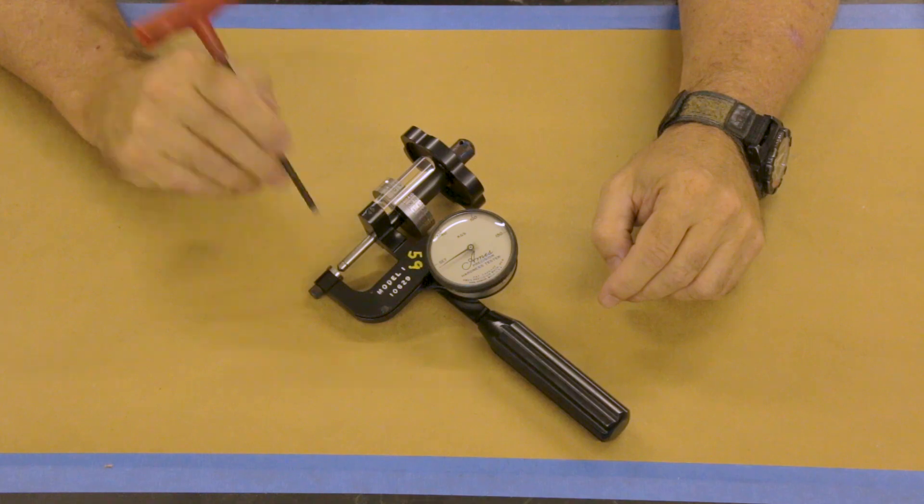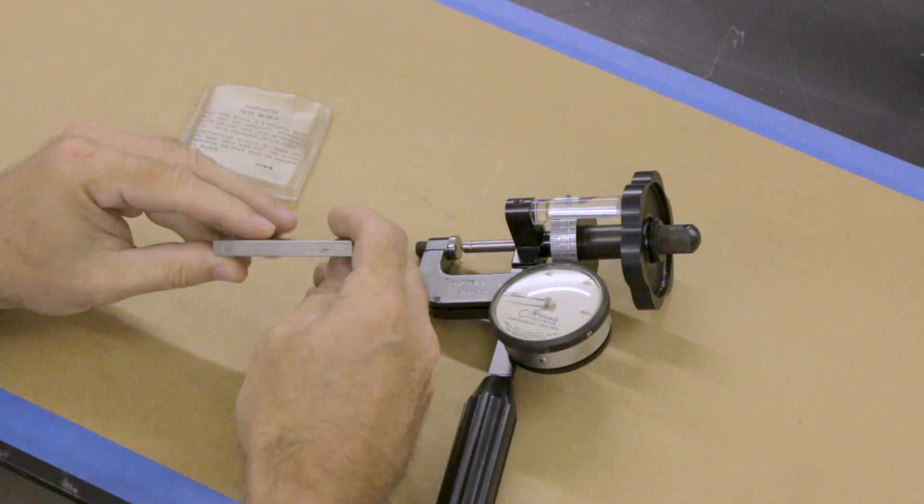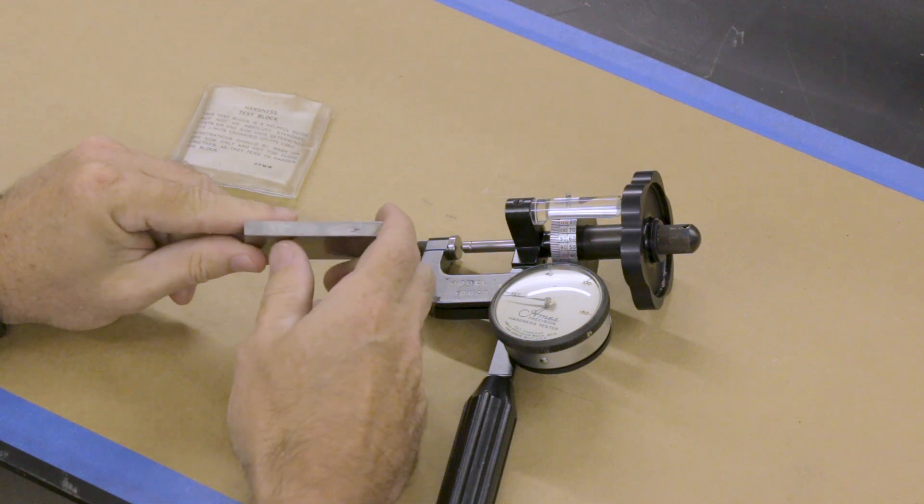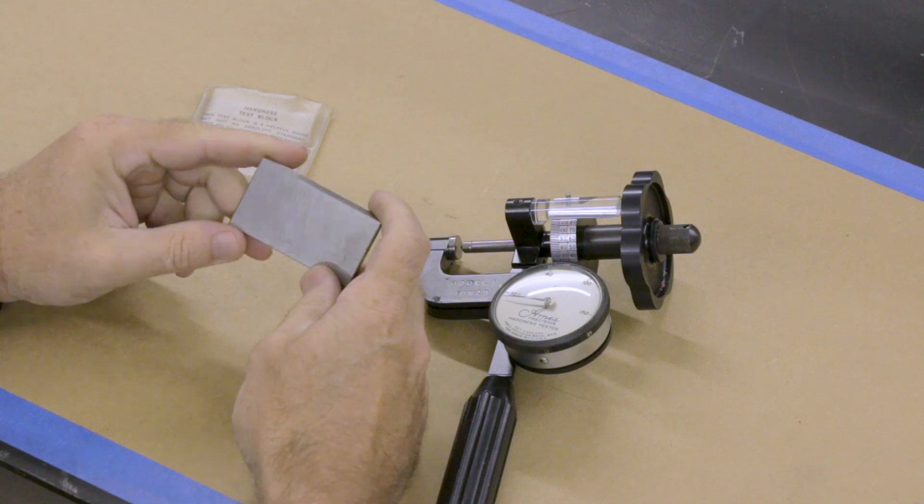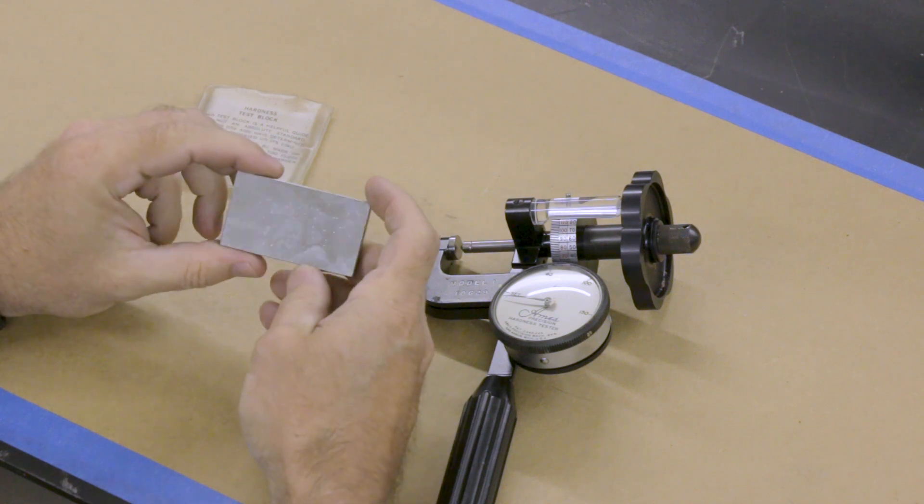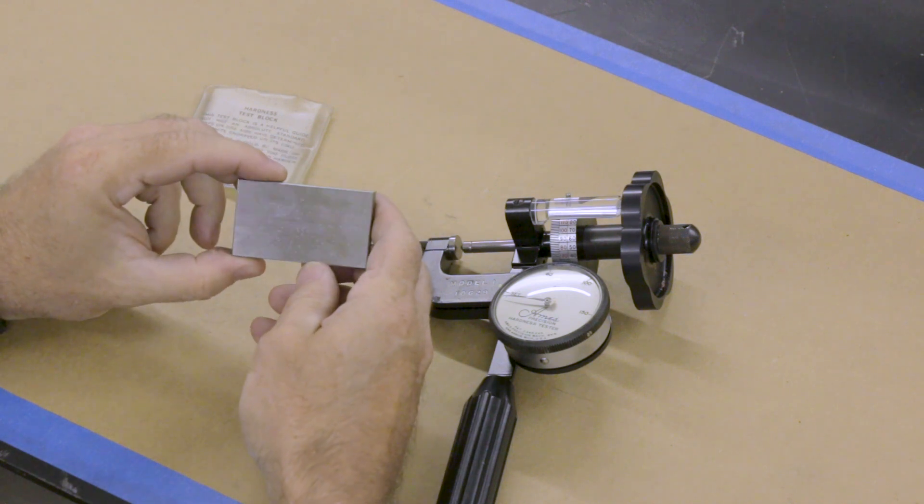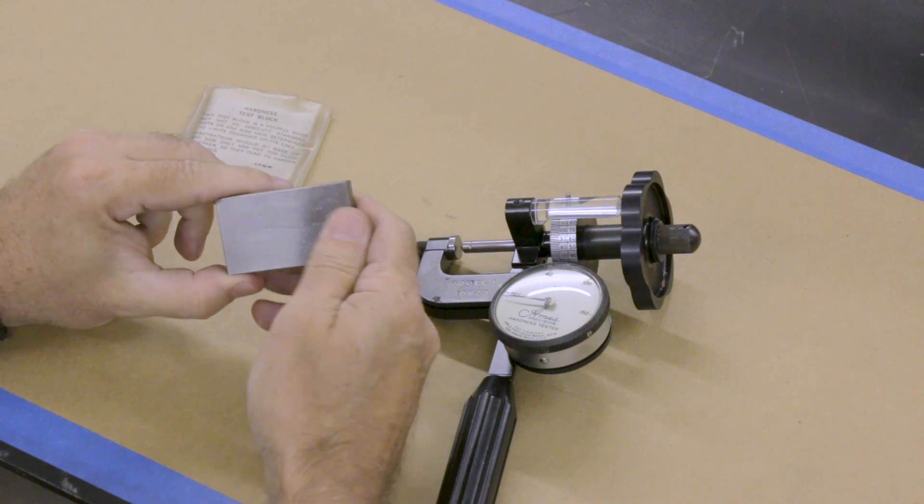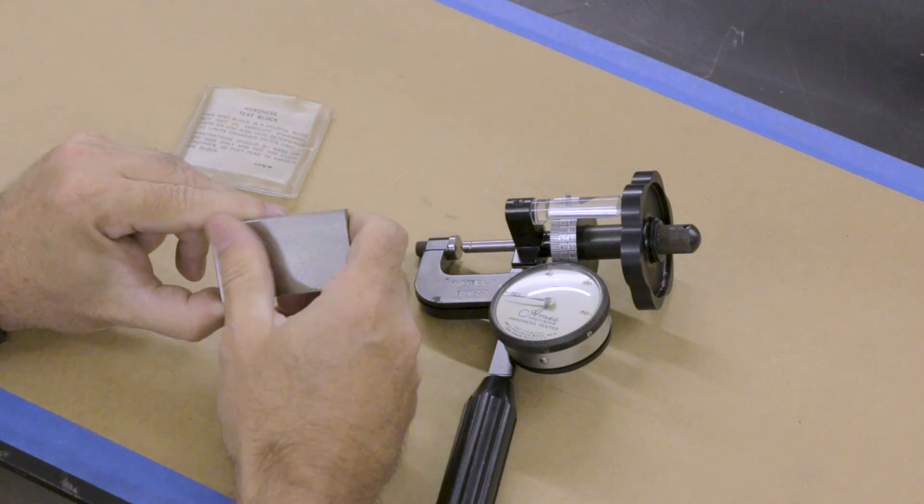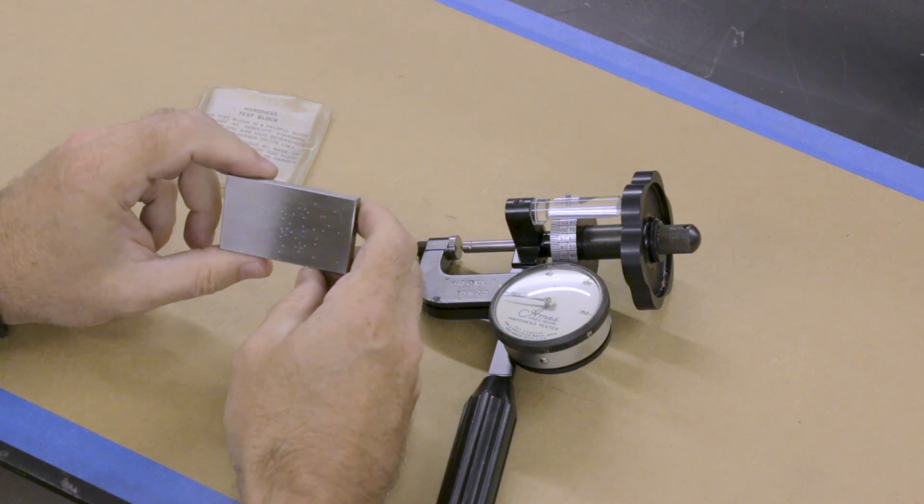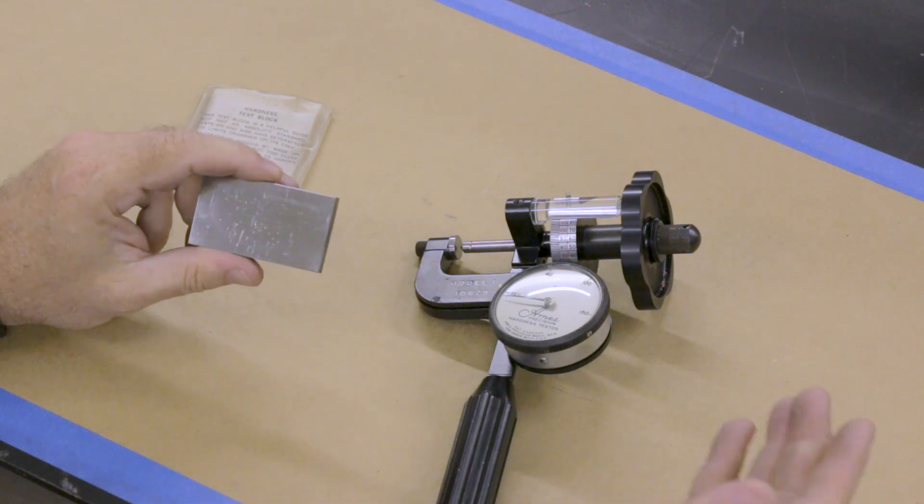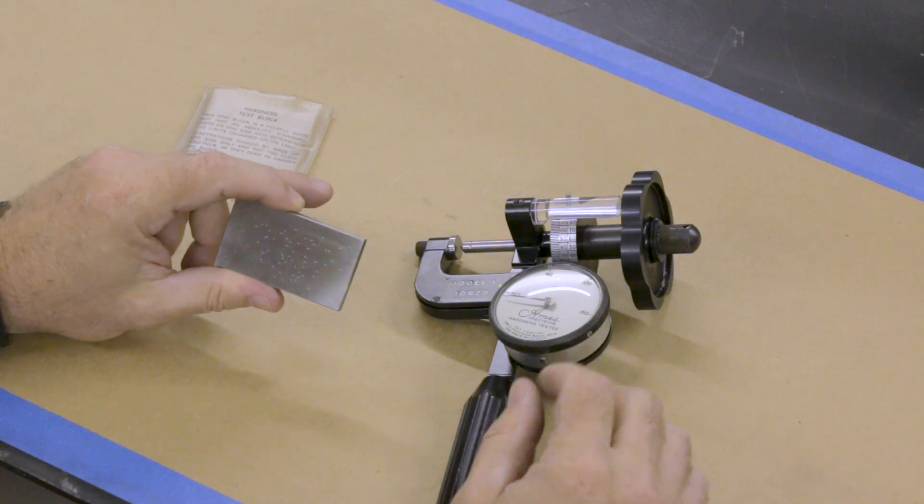Alright, so a hardness tester should come with some kind of a test block. And this one is marked on the side, I don't know if you can see it, but it says C64. So this block is verified hardened to Rockwell 64. Now when I got this hardness tester, it came with this block and another one that is, I believe, eight points lower. So I can test it against two different blocks at different hardness levels.